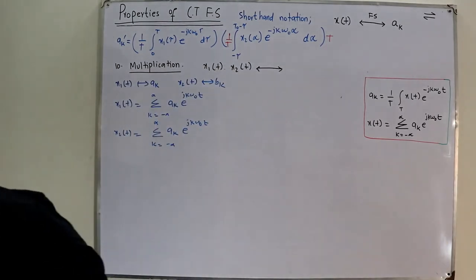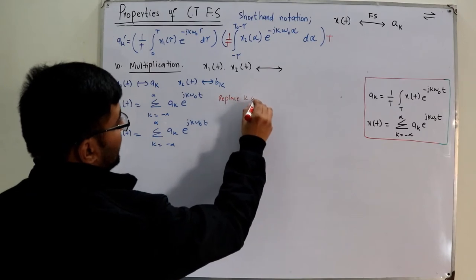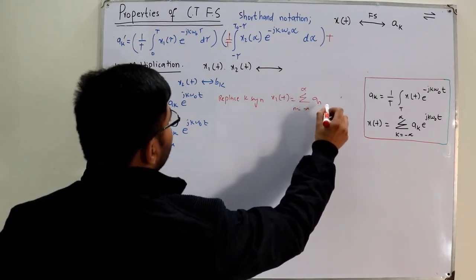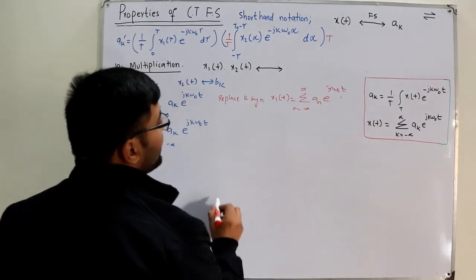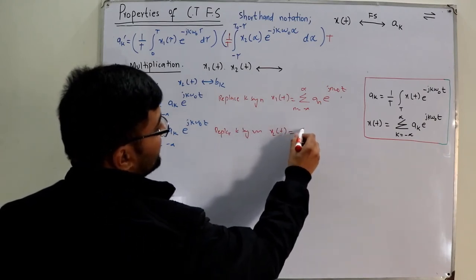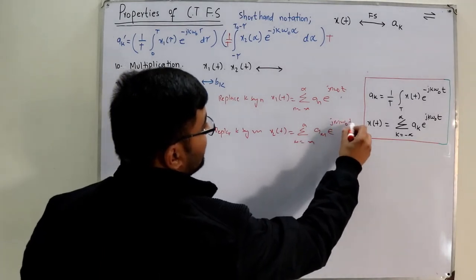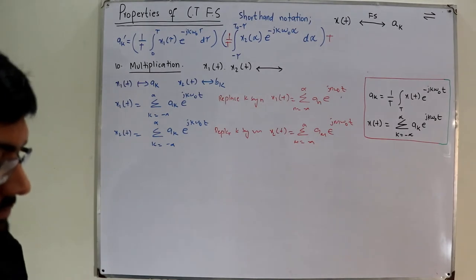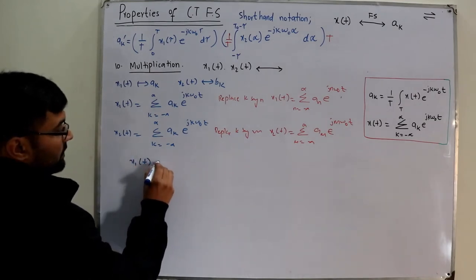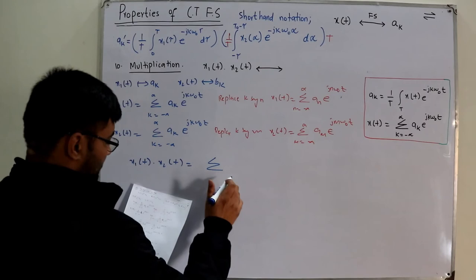To find the product, we replace the dummy variable k in x₁ by n and in x₂ by m. So x₁(t) becomes the summation over n of a_n e^(jnω₀t) and x₂(t) becomes the summation over m of b_m e^(jmω₀t). Multiplying the two series together gives a double summation.